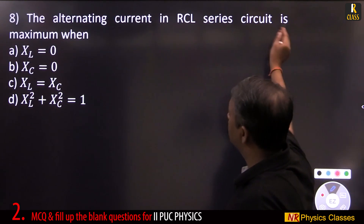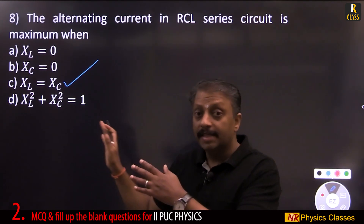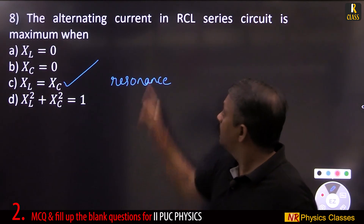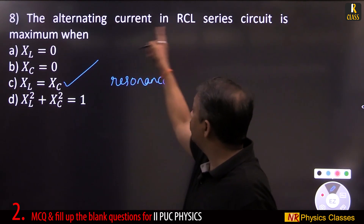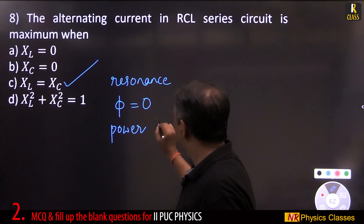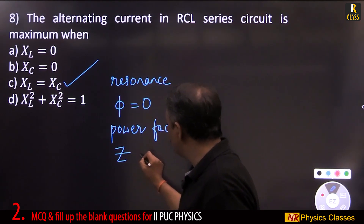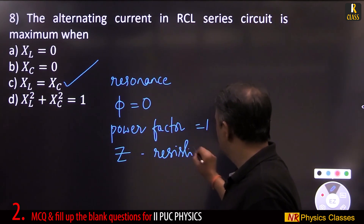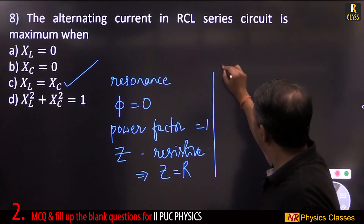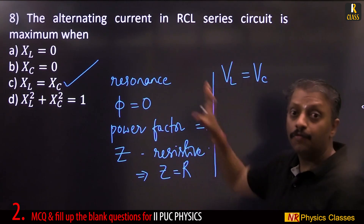The alternating current in an RCL circuit is maximum when X_L equals X_C (resonance). This also means the phase angle is zero, the power factor equals 1, the impedance is purely resistive (Z = R), and the potential difference across the inductor equals that across the capacitor. All these conditions describe maximum current.